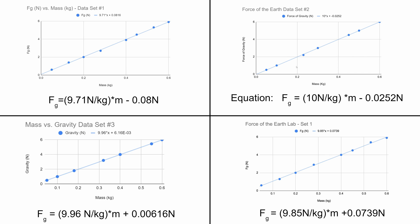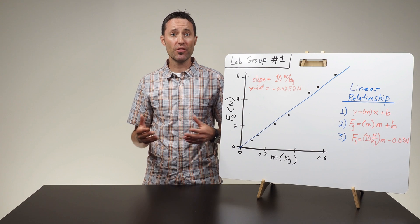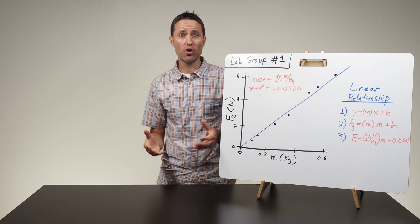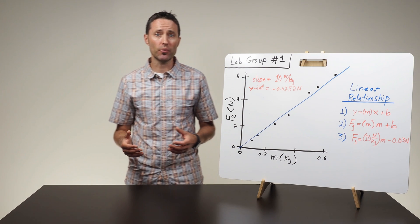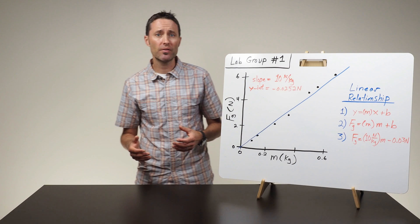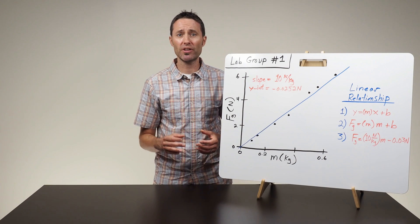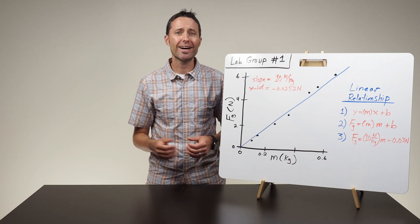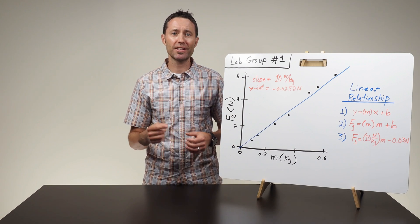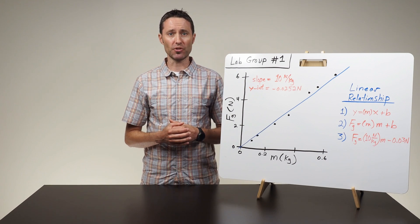When looking at the slope values, it should be clear that the force of gravity in all cases seems to increase by approximately 10 newtons for each one kilogram of mass. This is the meaning of the slope you want students to recognize: that there is approximately 10 newtons of gravitational pull on every one kilogram of an object's mass.